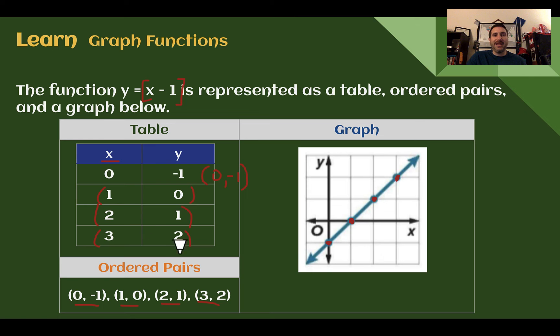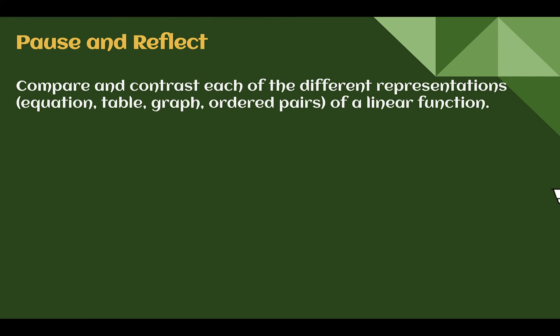All of these relate together. So a function with a rule, we can make a table, then ordered pairs, and then turn that into a graph. Take time to pause and reflect, compare and contrast each of the different representations of a linear function. There was an equation, a table, graphs, and ordered pairs. Pause the video now and write down your thoughts.